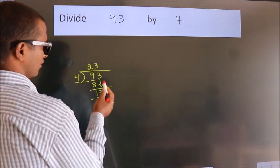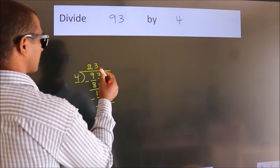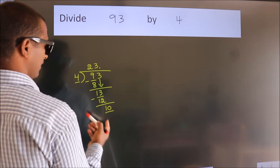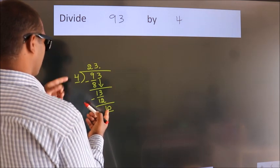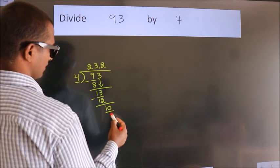After this, no more numbers to bring down. So what we do is, we put a dot and take 0. So 10. A number close to 10 in the 4 table is 4 twos, 8.